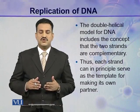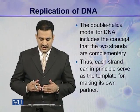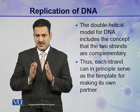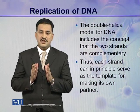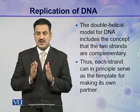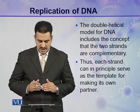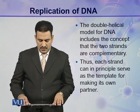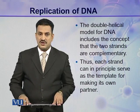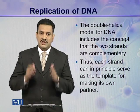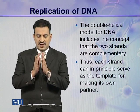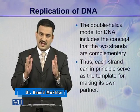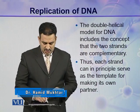The double helical model proposed by Watson and Crick includes the concept that the two strands are complementary to each other. In a DNA duplex, the two strands are complementary, so each strand can in principle serve as the template for making its own partner during replication. During replication, these two complementary strands get separated and each strand can make its own complementary strand.